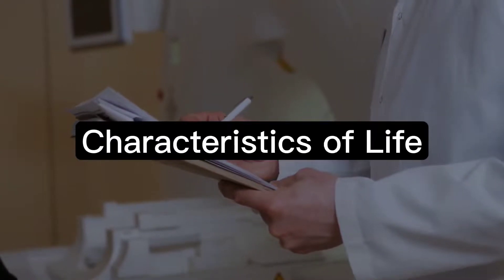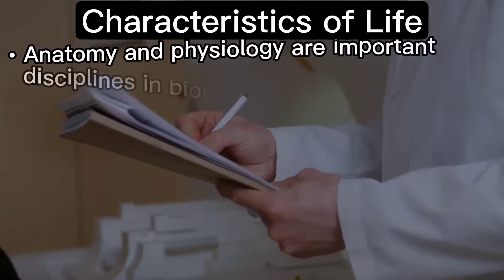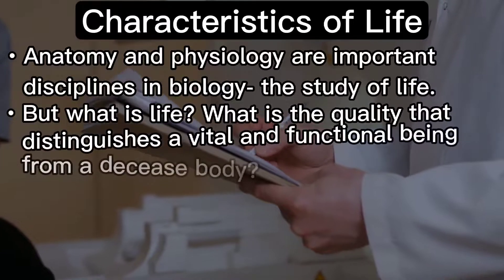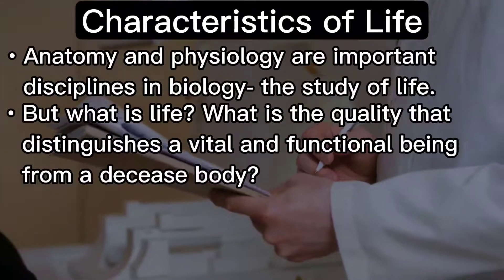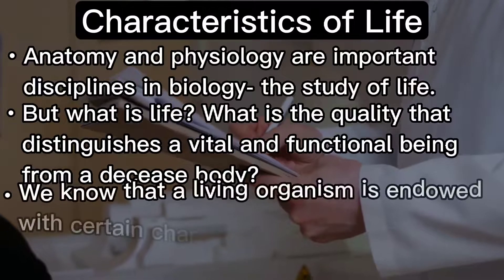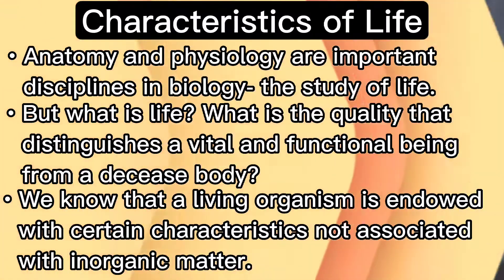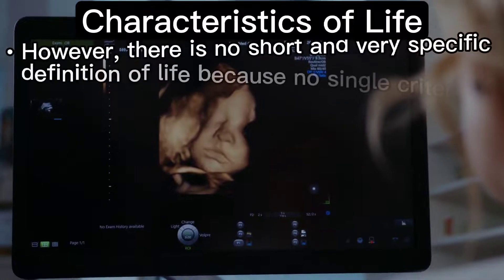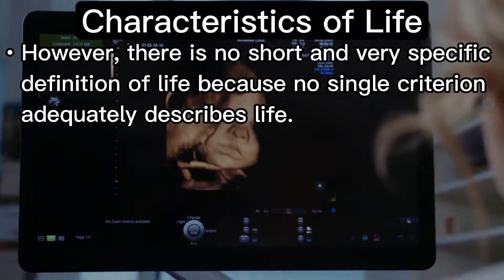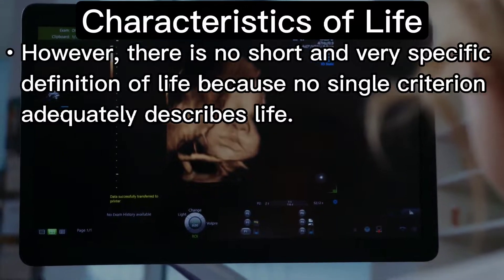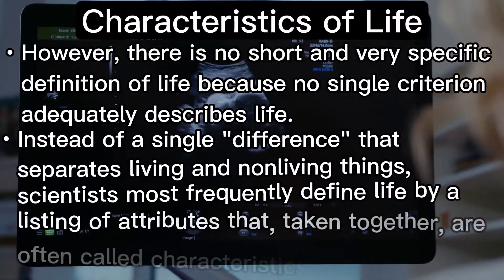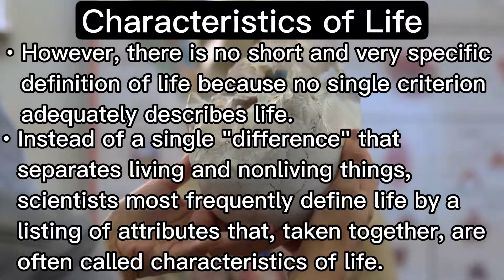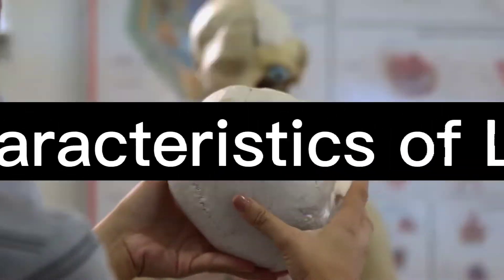Characteristics of Life. Anatomy and Physiology are important disciplines in Biology, the study of life. But what is life? What is the quality that distinguishes a vital and functional being from a deceased body? We know that a living organism is endowed with certain characteristics not associated with inorganic matter. However, there is no short and very specific definition of life because no single criteria adequately describes life. Instead of a single difference that separates living and non-living things, scientists most frequently define life by a listing of attributes that, taken together, are often called characteristics of life.